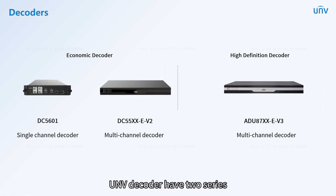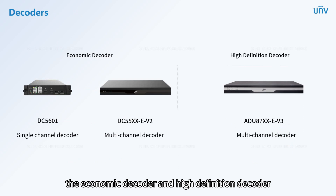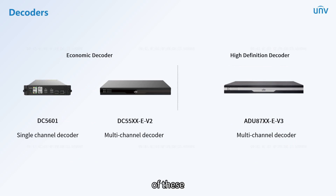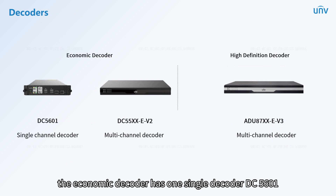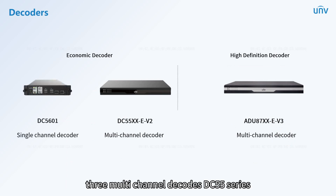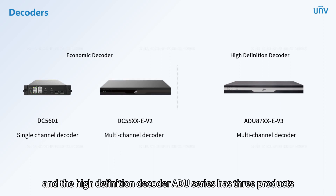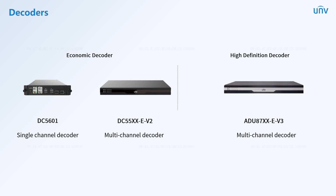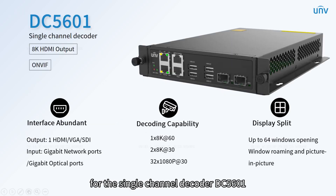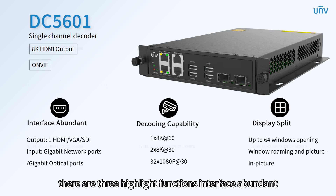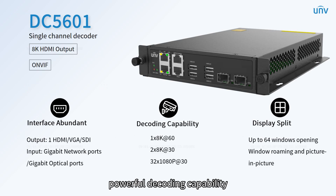UNV decoders have two series: the economic decoder and the high-definition decoder. The economic decoder includes the single decoder DC5601 and three multi-channel decoders in the DC55 series, while the high-definition decoder ADU series has three products. For the single-channel decoder DC5601, there are three highlight functions: abundant interfaces, powerful decoding capability, and display split functions.